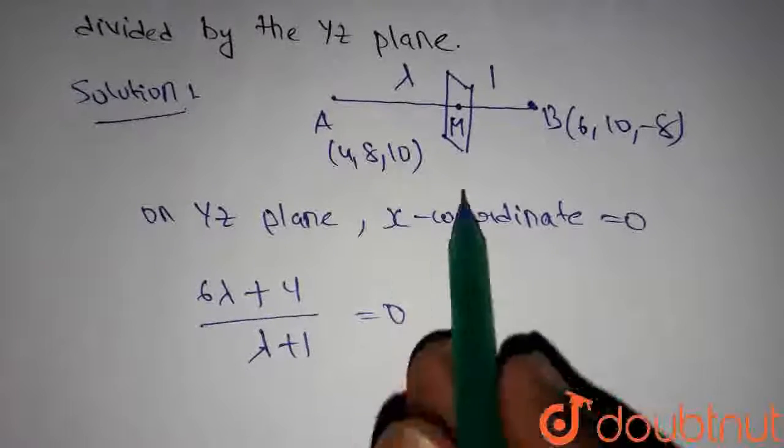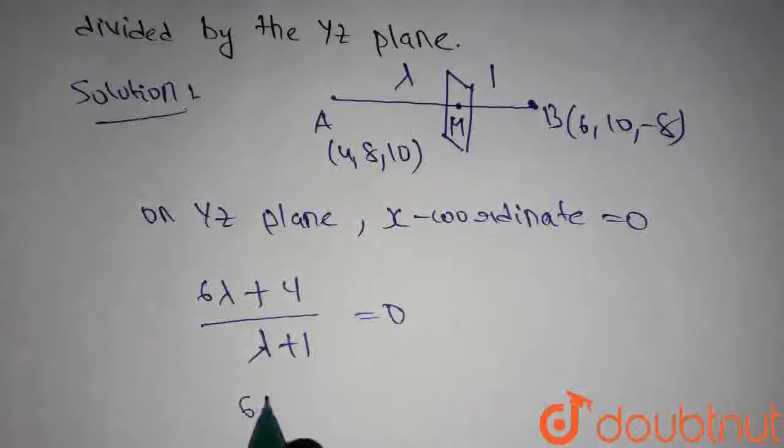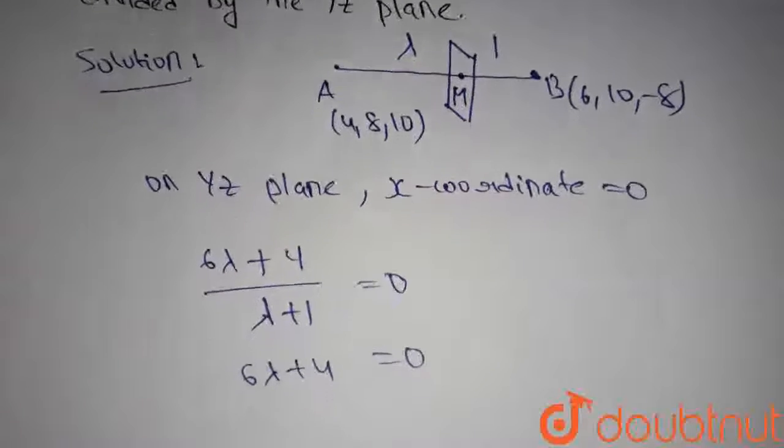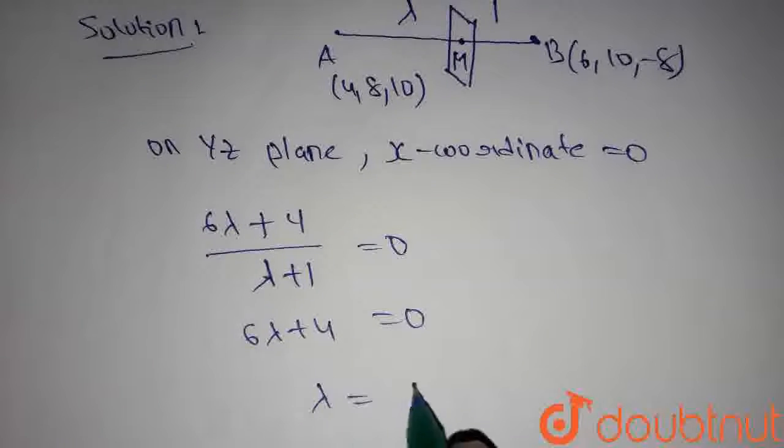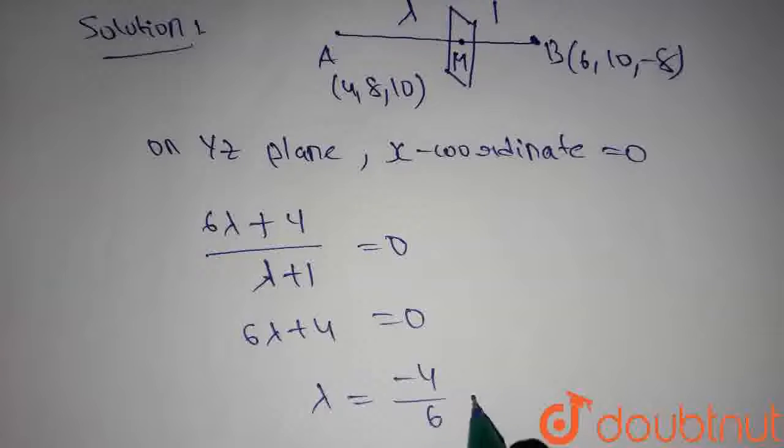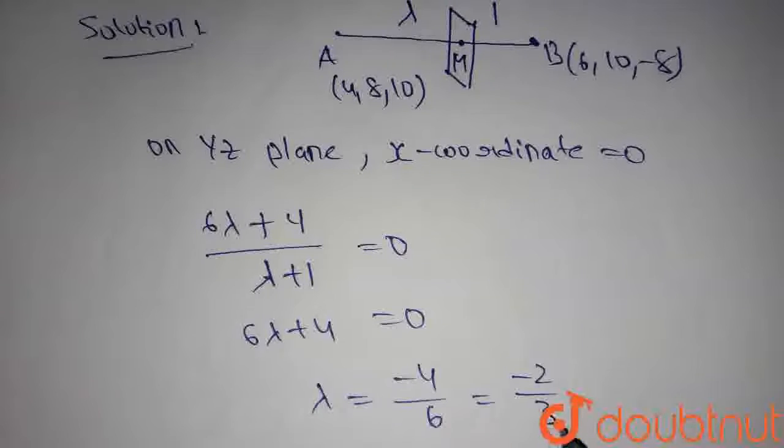Since x coordinate equals 0 on yz plane, then we get 6 lambda plus 4 equals 0. Then we get lambda equals minus 4 by 6, which is minus 2 by 3.